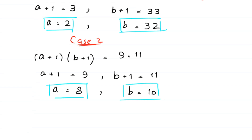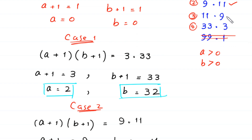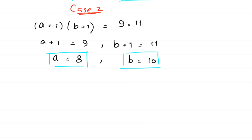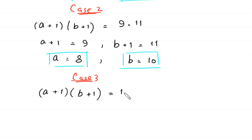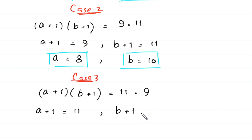Case 3 is 11 times 9. We write (A plus 1) times (B plus 1) equal to 11 times 9. So A plus 1 equals 11 and B plus 1 equals 9. Subtracting 1 from both sides, we get A equals 10 and B equals 8.